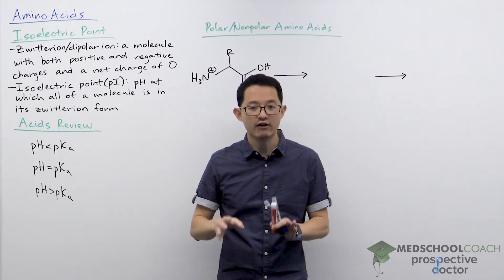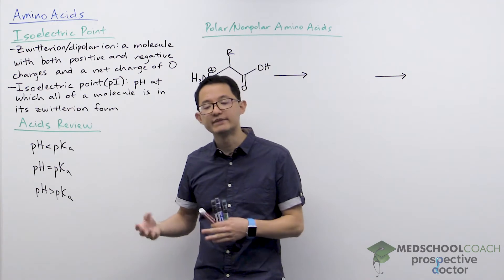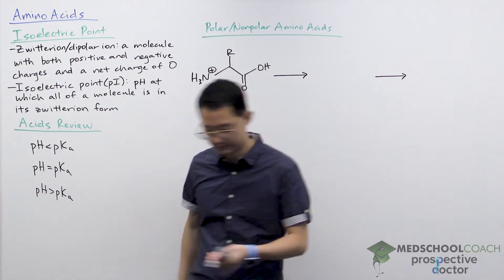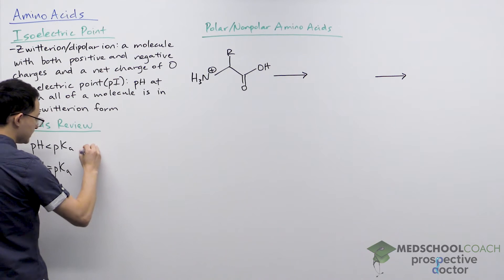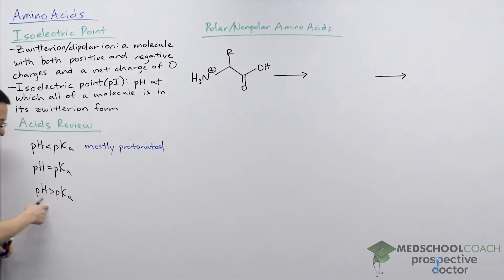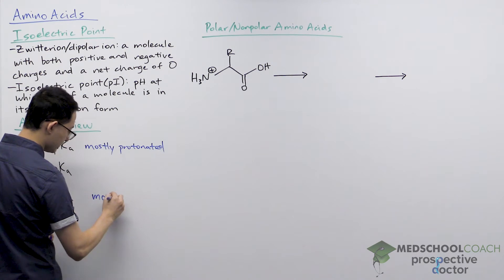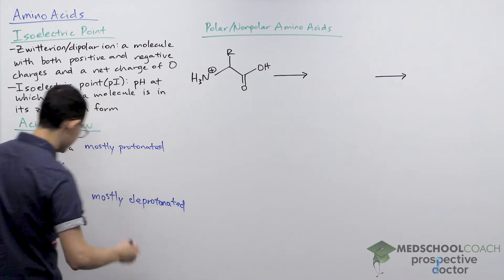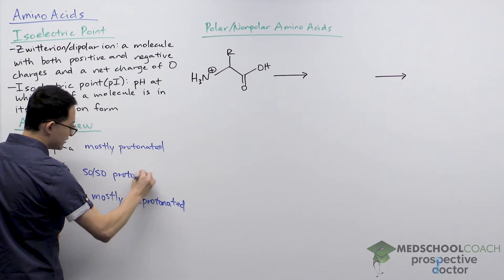To better understand how this works, let's do a quick review of acids. When you're looking at an acidic functional group, whether your functional group is protonated or deprotonated in solution depends on the pH compared to the pKa of that particular functional group. When the pH is less than pKa, we're in very acidic conditions, so your molecule is mostly in its protonated form. Conversely, when the pH is greater than the pKa, your molecule is going to be mostly in its deprotonated form. And if the pH is equal to the pKa, your molecule is 50-50 — half protonated, and the other half deprotonated.